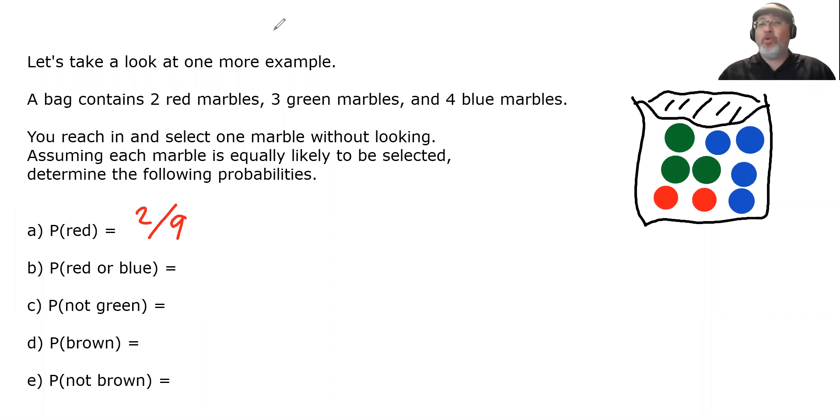B, the probability of drawing a red or blue marble. Well, which ones are red or blue? These are red. These are blue. So we're being asked, what's the probability of drawing one or the other? Well, how many marbles did I highlight? Six. Out of how many total? Nine. The probability is six-ninths. But you can reduce that by three to get two-thirds.